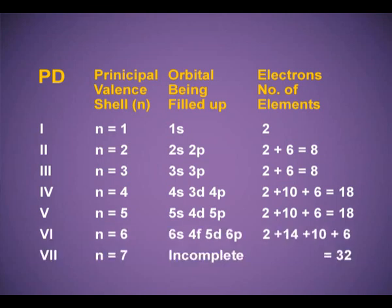Period 6: n = 6; orbitals 6s, 4f, 5d, and 6p — 2 electrons in s, 14 in f, 10 in d, and 6 in p; 32 total, and hence 32 elements in the sixth period. Period 7 is still incomplete.